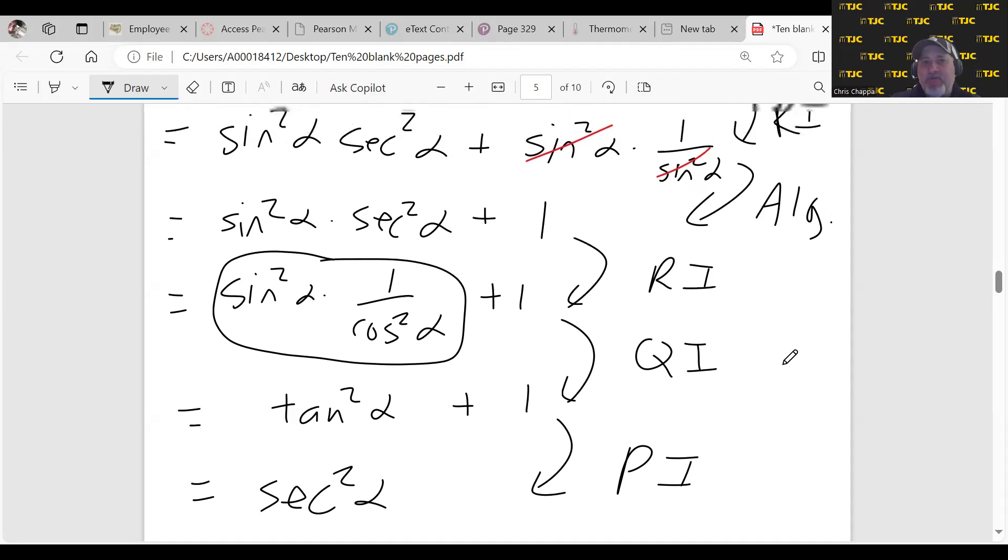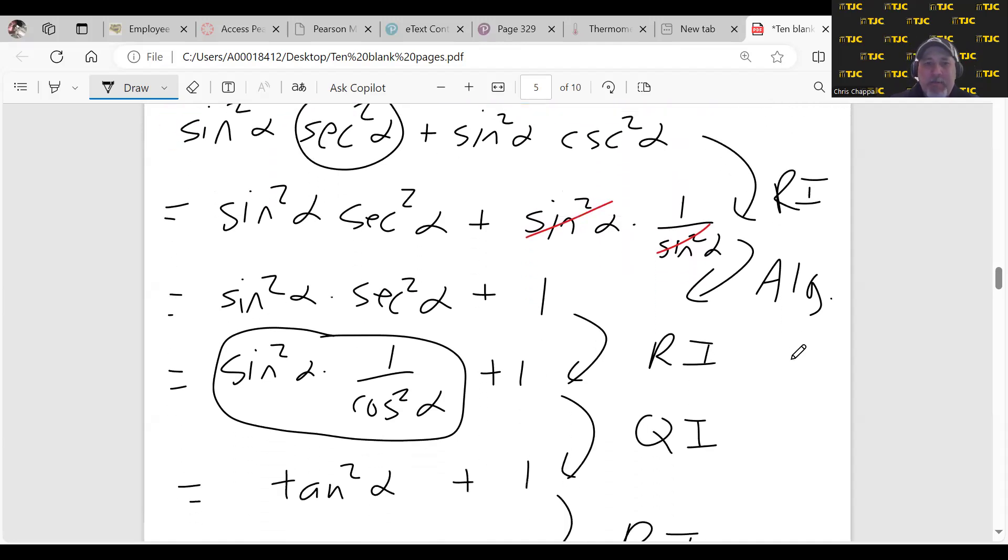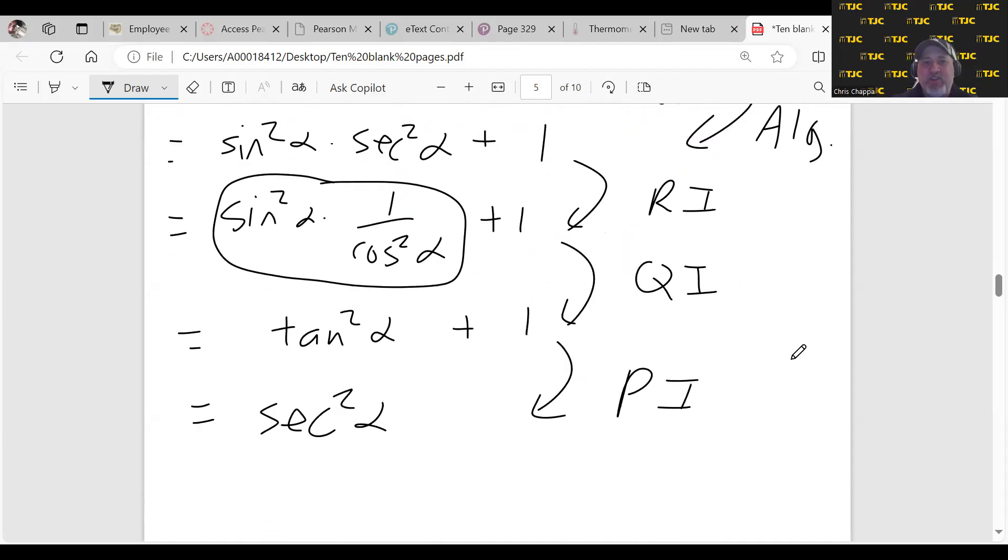I thought preserving the secant squared at the beginning was a good idea because the right side had a secant squared, but at some point I was forced to change it to cosine, but it got back to secant squared. So I liked this one. It had a twist in it that I wasn't expecting, a twist that kind of caught me off guard.